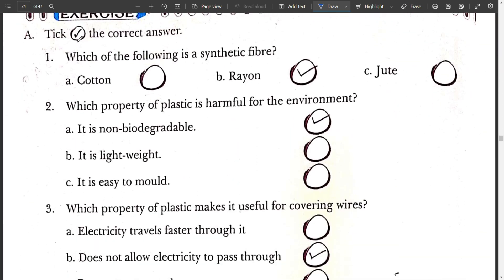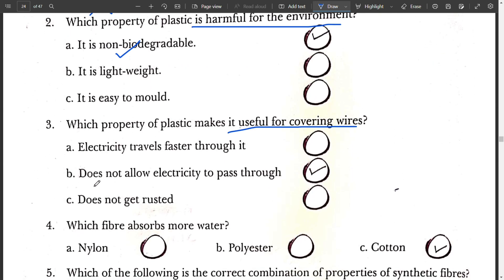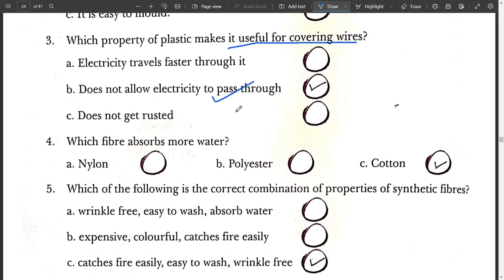Next, book exercise. Take the correct answer. Which of the following is a synthetic fiber? Rayon is the synthetic fiber. Cotton is not a synthetic fiber. Jute is also not a synthetic fiber. They both are natural fibers. Question number 2. Which property of plastic is harmful for the environment? Question number 3. It is non-biodegradable. Which property of plastic makes it useful for covering wire? Plastic does not allow electricity to pass through it. It means plastic is an insulator.